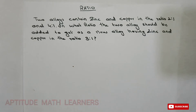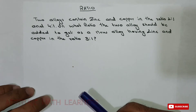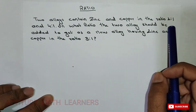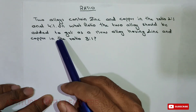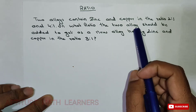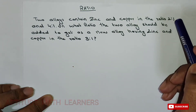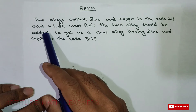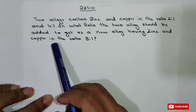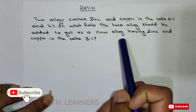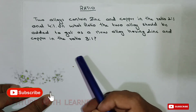Hello and hi to our YouTube channel Aptitude Math Learn. Today we are having a very interesting question: two alloys contain zinc and copper in the ratio 2:1 and 4:1. In what ratio should the two alloys be added to get a new alloy having zinc and copper in the ratio 3:1?